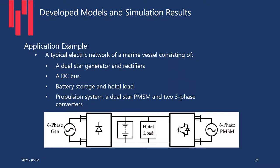Now we'll discuss an application example. I will describe the circuits and simulation results, and after that I will show the actual simulation using RSCAD software. This is a typical — very simplified — electric network for a marine vessel. We have a dual-star generator to generate power, diode rectifiers, a DC bus, a battery and hotel load, and a propulsion system with a six-phase PMSM drive, which has two three-phase converters.